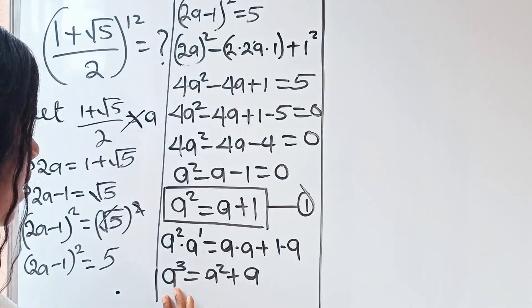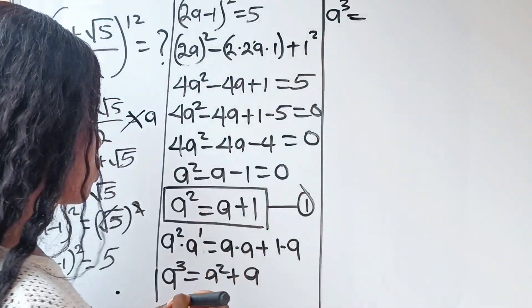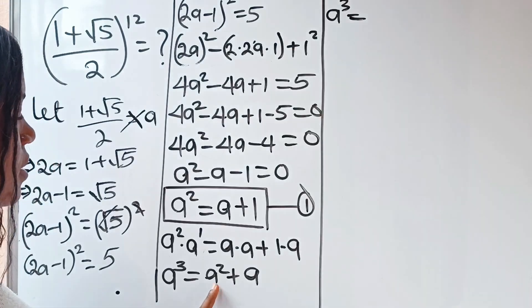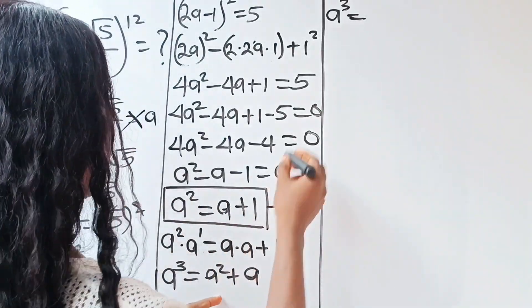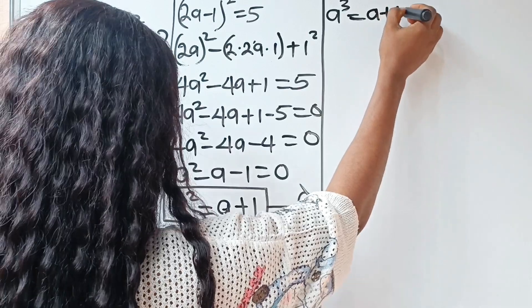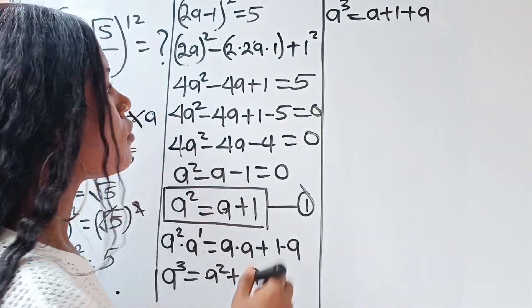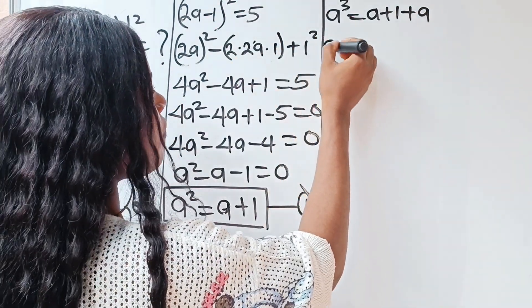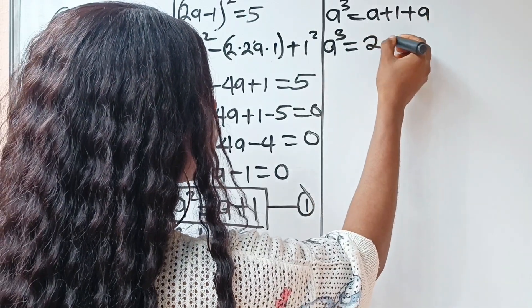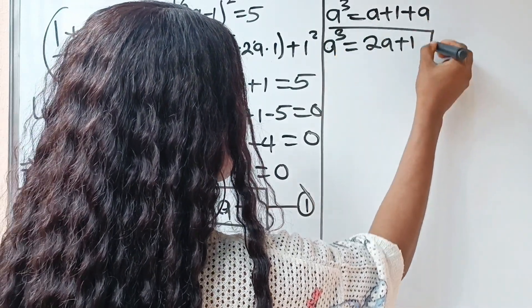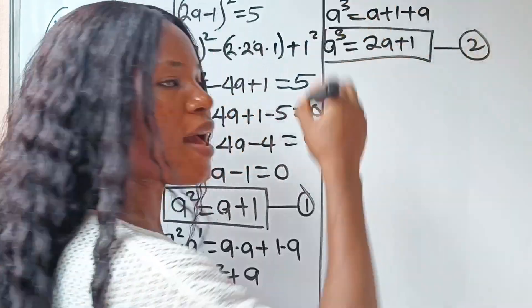Now, look at what we have here. We have a³ = a² + a. We replace a² with (a + 1) from equation 1. So we now have a³ = (a + 1) + a = 2a + 1. A very important equation.